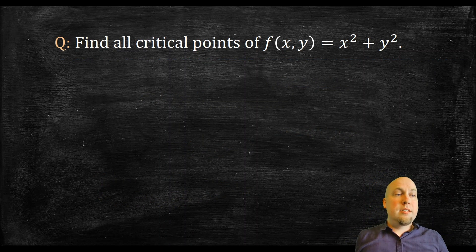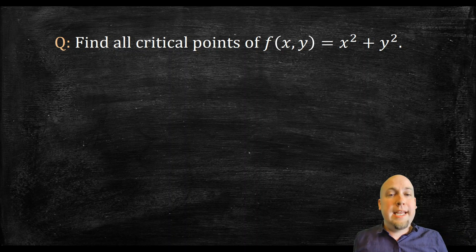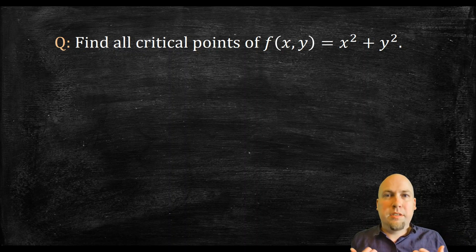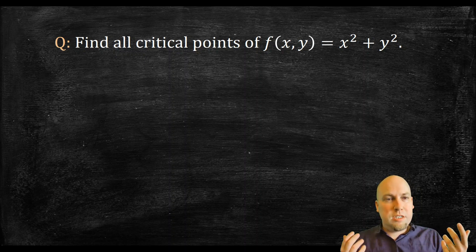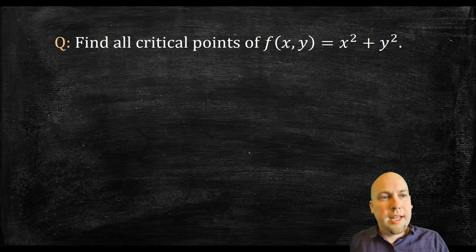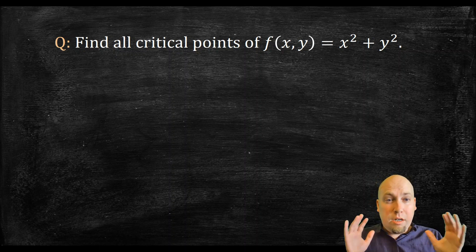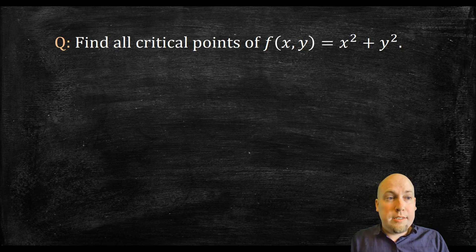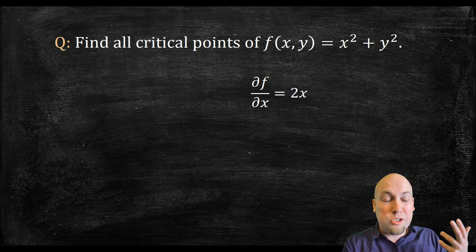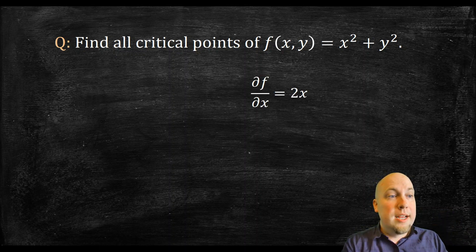Let's go through a quick example to get a feeling for critical points of multivariable functions. We'll start with the simple function f(x, y) = x squared plus y squared and find all of its critical points. The way to do this is to take the partial derivatives and set them equal to zero.